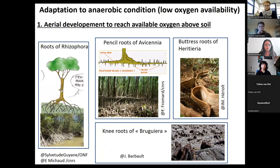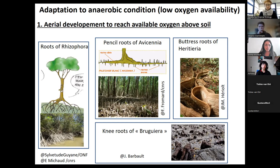Some examples of well-known genera include Rhizophora, Avicennia, Xylocarpus, and Bruguiera. Roots can capture or release different gases involved in photosynthetic processes thanks to small pores called lenticels. There is also an internal tissue, the aerenchyma, which allows the transport of gases within roots all the way to the trunks.